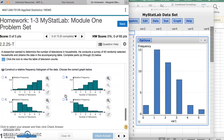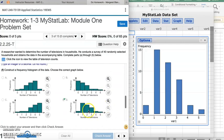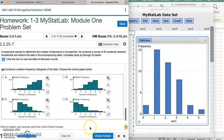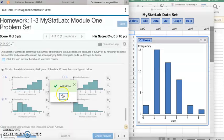Part G, construct a relative frequency histogram of the data. Choose the correct graph below. Here's a secret. Your relative frequency histogram should have the exact same shape as your frequency histogram. Remember, the only difference here is that we're dividing everything by 40. So it keeps the same proportions. It's just a different scale on your y-axis. So here, we have 0 to 0.4. Up here, we had 0 to 16. So let's go ahead and select Option C. Check answer. Well done.